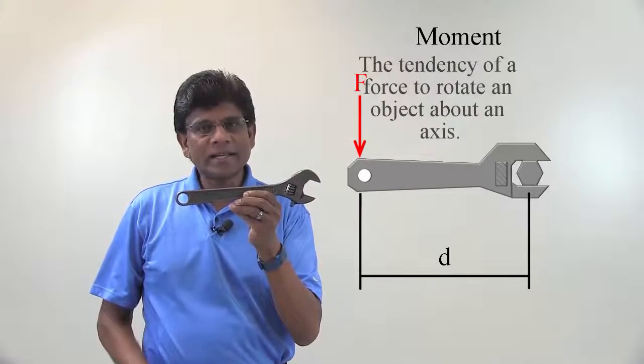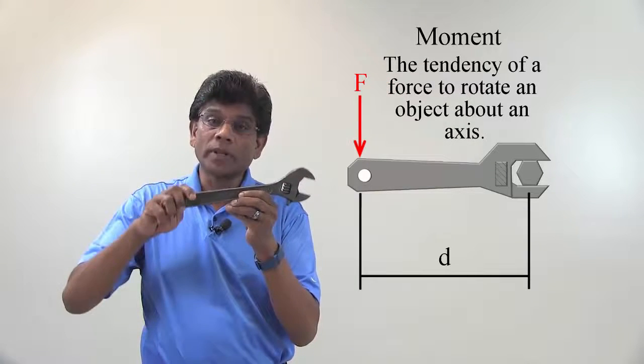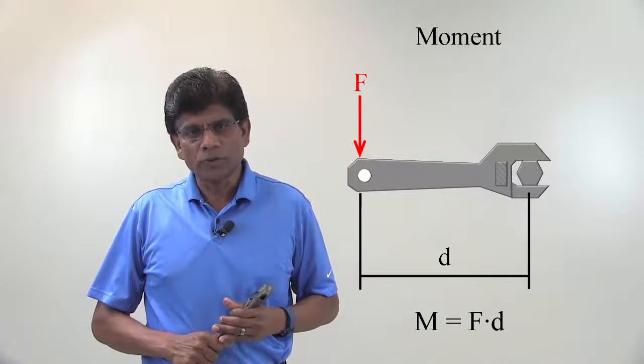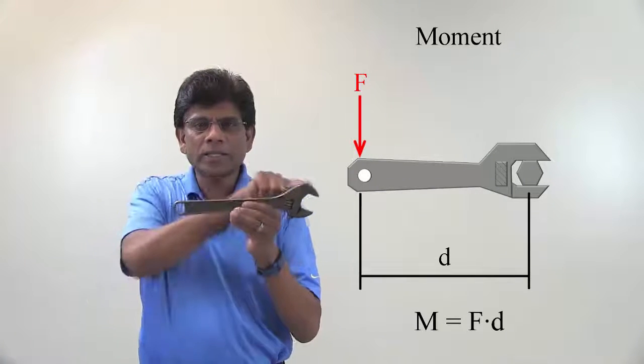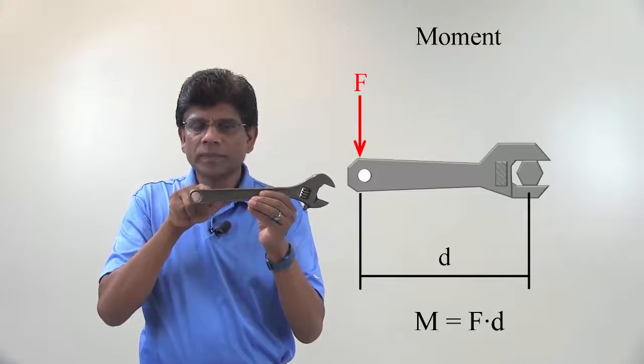So, moment is a tendency of a force to rotate an object about an axis. The magnitude of the moment is equal to force times the perpendicular distance from the line of action of the force to the center of the rotation.